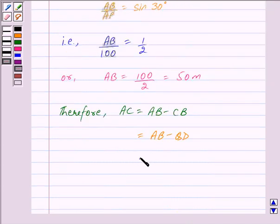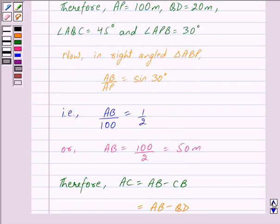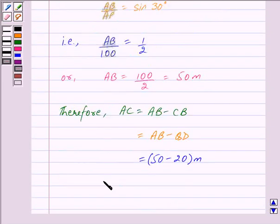This is equal to 50 minus 20, because we know that AB is equal to 50 meters and QD is equal to 20 meters. And so we get AC is equal to 30 meters.